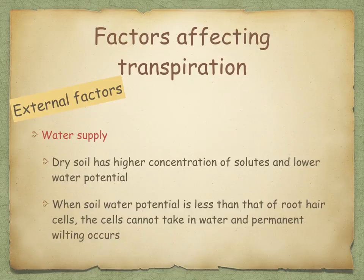Water supply is another external factor. Dry soil has a higher concentration of solutes and lower water potential. When soil water potential is less than that of the root hair cells, the root hair cells cannot take in water, so permanent wilting occurs.